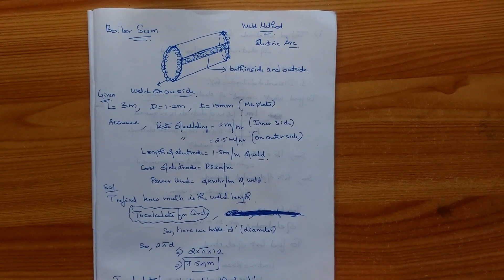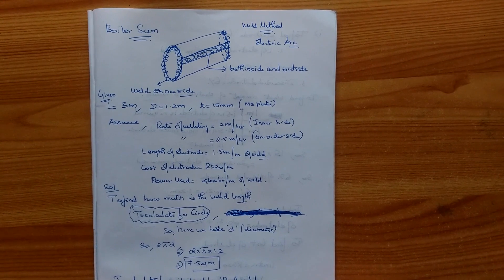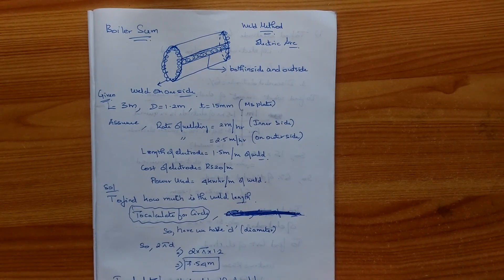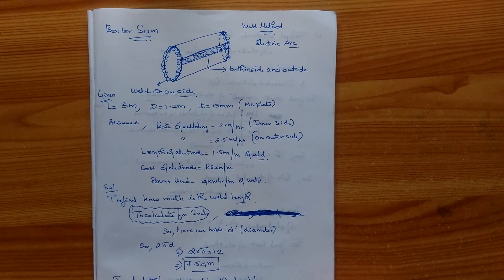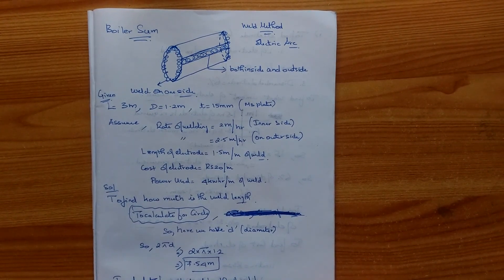Estimate the electric arc welding cost for a cylindrical boiler drum, 3m length by 1.2m diameter, which is to be made from 15mm thick mild steel plates. Both the ends are closed by welding circular plates to the drum.